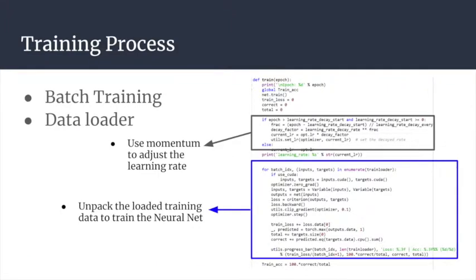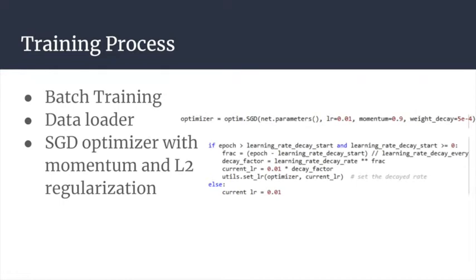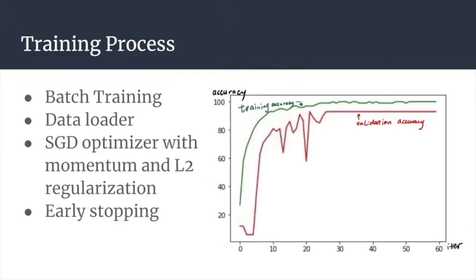We mainly use four tricks to make our training process more efficient. The first two are batch training and data loader, which enables us to train the model faster and conveniently do transformations to the training set. The third is SGD optimizer with momentum and L2 regularization. Momentum adjusts the learning rate, which makes the model converge faster, and L2 regularization prevents overfitting. Finally, we use early stopping to prevent overfitting. After epoch 30, both validation and training accuracy almost stay the same, so we set epoch 30 as the stopping point.